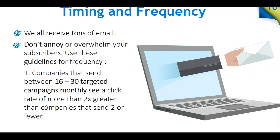Because we all receive a lot of emails and you don't want to be annoying, here are some general guidelines around frequency. Companies that send between 16 and 30 targeted emails monthly see a click rate more than two times greater than companies that send two or fewer. Sending 16 to 30 targeted campaigns monthly means you know who you're sending to and you're giving them the right content. Companies sending too few probably get ignored — people will forget about you.